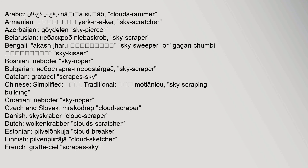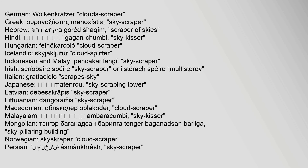Continuing skyscraper loan translations: Chinese, mòtiān lóu (skyscraping building); Croatian, neboder (sky ripper); Czech and Slovak, mrakodrap (cloud scraper); Danish, skyskraber (cloud scraper); Dutch, wolkenkrabber (clouds scratcher); Estonian, pilvelõhkuja (cloud breaker); Finnish, pilvenpiirtäjä (cloud sketcher); French, gratte-ciel (scrape sky); German, Wolkenkratzer (clouds scraper); Greek, ουρανοξύστης (skyscraper); Hebrew, gordshakim (scraper of skies); Hindi, gaganacumbi (sky kisser); Hungarian, felhőkarcoló (cloud scraper); Icelandic, skýjakljúfur (cloud splitter); Indonesian and Malay, pencakar langit (skyscraper); Irish, spéir-scríobaire (spire skyscraper) or ilstoraigh (multi-story).